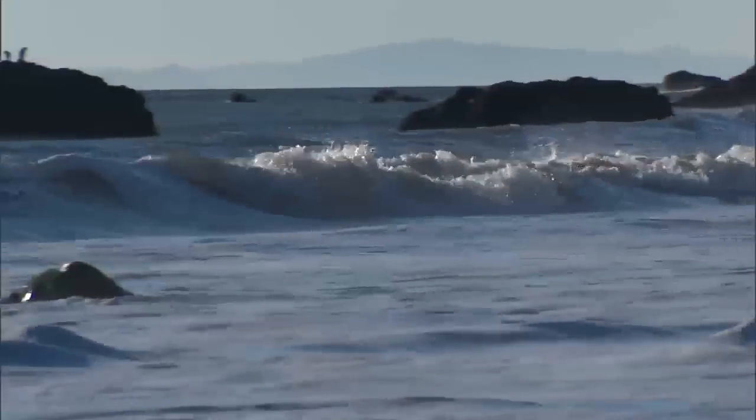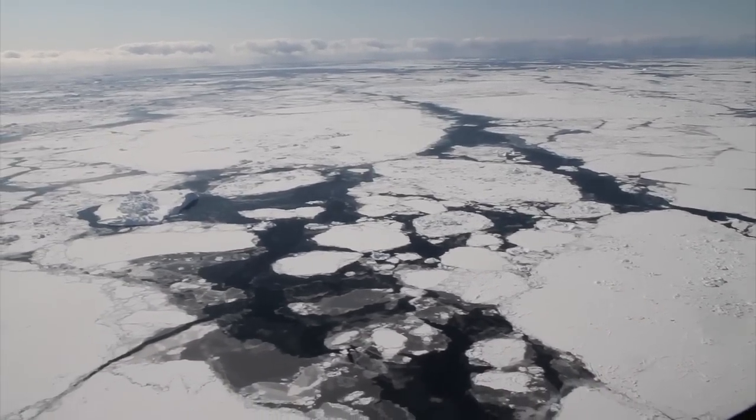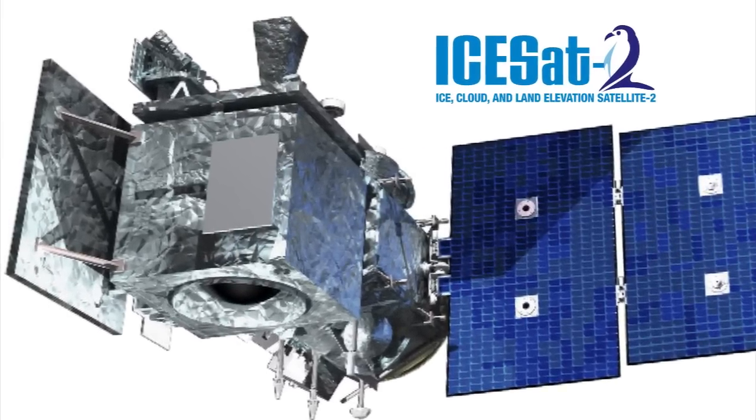Okay, so the oceans and the ice in them help control the temperatures on Earth. And with the help of ICESat-2, NASA will be able to watch the changes in ice thickness. And all that information can be used to help us take better care of our world.